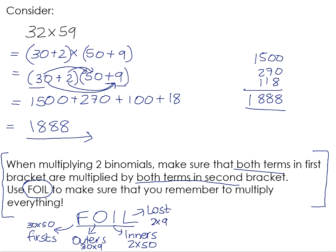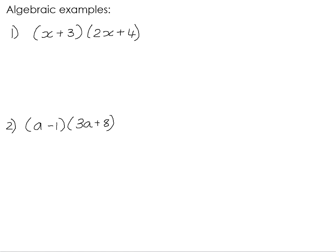Let's have a look at some algebraic examples. If we have x plus 3 multiplied by 2x plus 4, if we remember to do FOIL, the F stands for the two first terms in each bracket. So the two first terms would be the x and the 2x. So x times 2x is 2x squared. The outers would be the two that are furthest away from each other. So it would be the x and the 4.